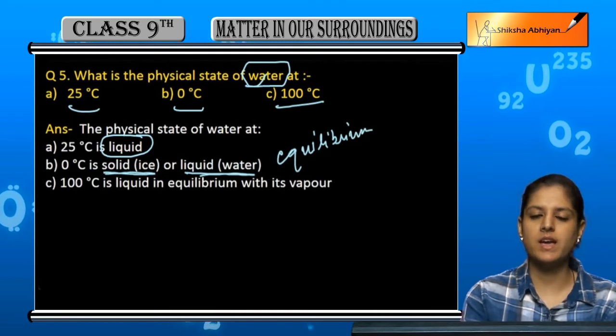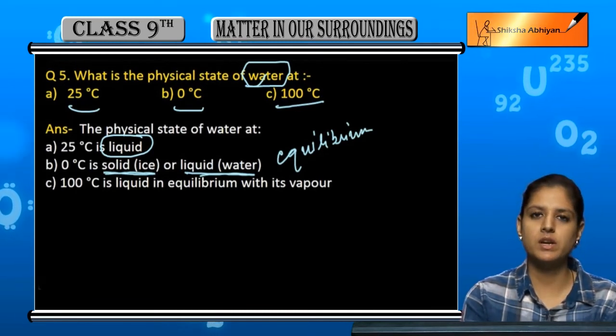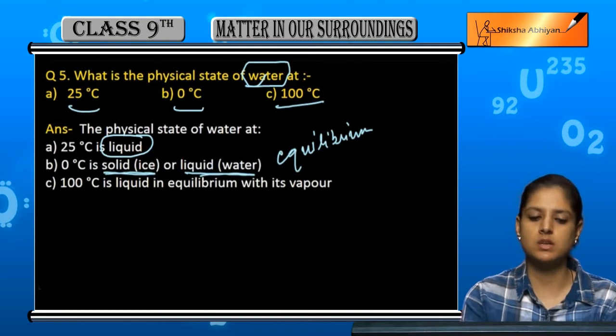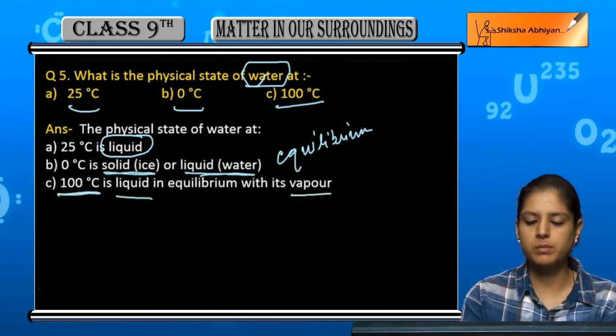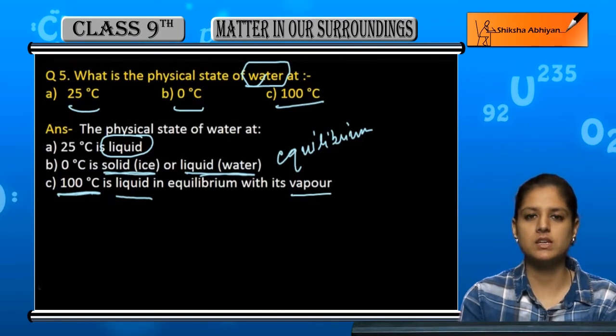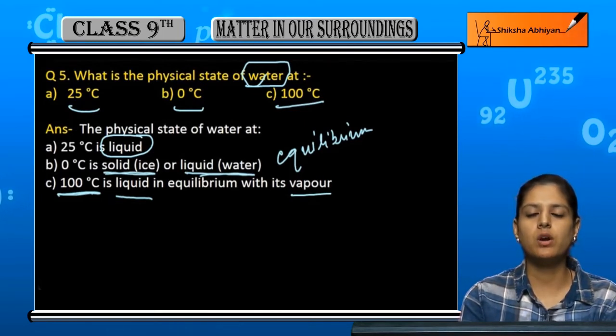between ice and water, matlab solid or liquid dono mein exist kar sakta hai. Hundred degree Celsius pe liquid or vapor ke andar equilibrium hota hai - either it can be in a liquid or vapor.